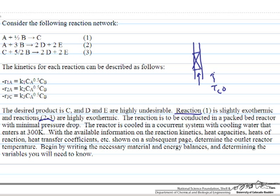We start by writing the material balances for each component in terms of molar flow rates, because this is a system of multiple reactions and that usually makes it advantageous to work in terms of moles. For component A, we write dFa/dW equal to the net rate of formation of A through reaction 1 plus the net rate of formation of A through reaction 2. These are negative quantities so Fa decreases along the reactor, and we will need to know the initial flow rate of A.